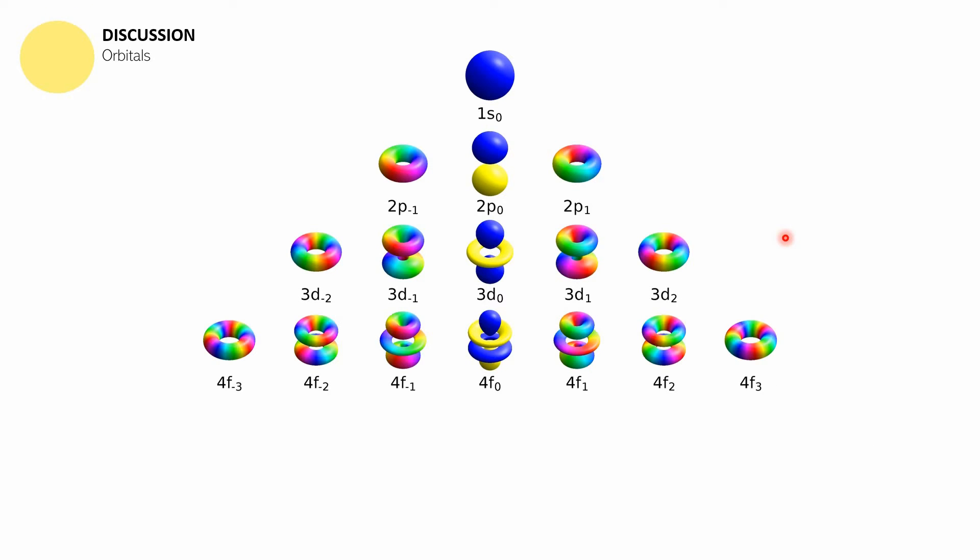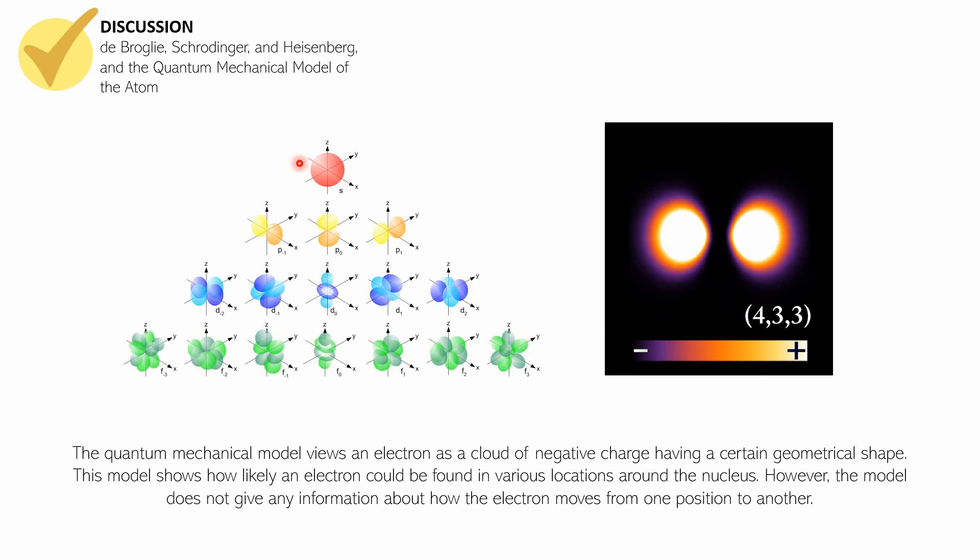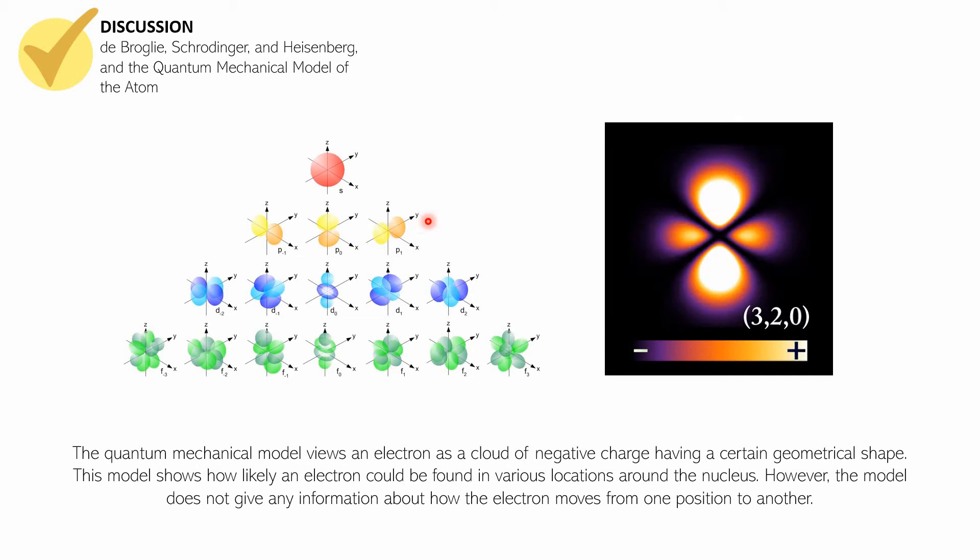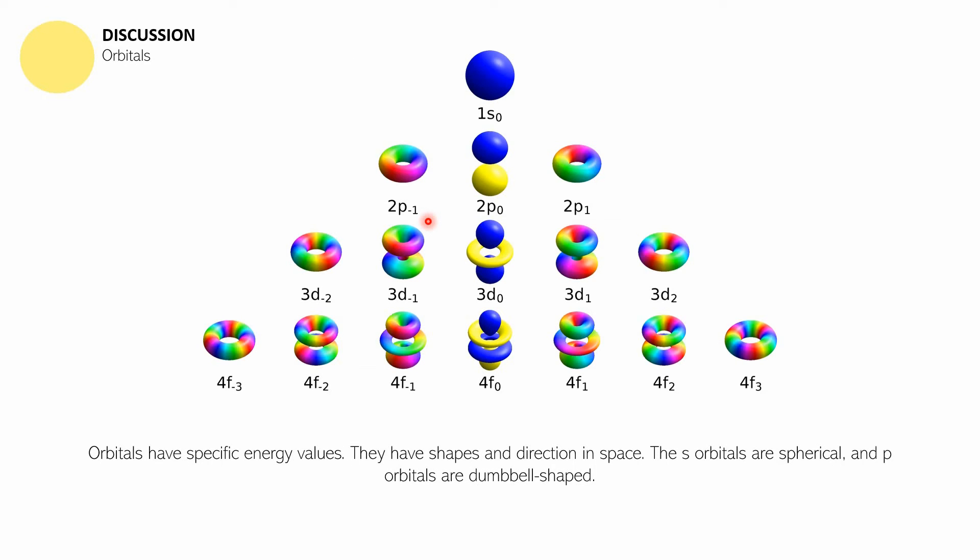For the last part of this video we have a discussion about orbitals. First, the s orbital is spherical, and then we have the oriented p orbitals, the d orbitals, and the f orbitals. Orbitals have specific energy values, shapes, and directions in space. The s orbitals are spherical and p orbitals are dumbbell-shaped. Going back to this illustration, you can see the orientation: x, y, and z. The x orientation is this one here, the y orientation is right there, and the z orientation is right there. So p sub zero is oriented with the z axis, p negative one is oriented with the x axis, and p sub one is oriented with the y axis. So there is a direction, aside from the shape of the orbital.